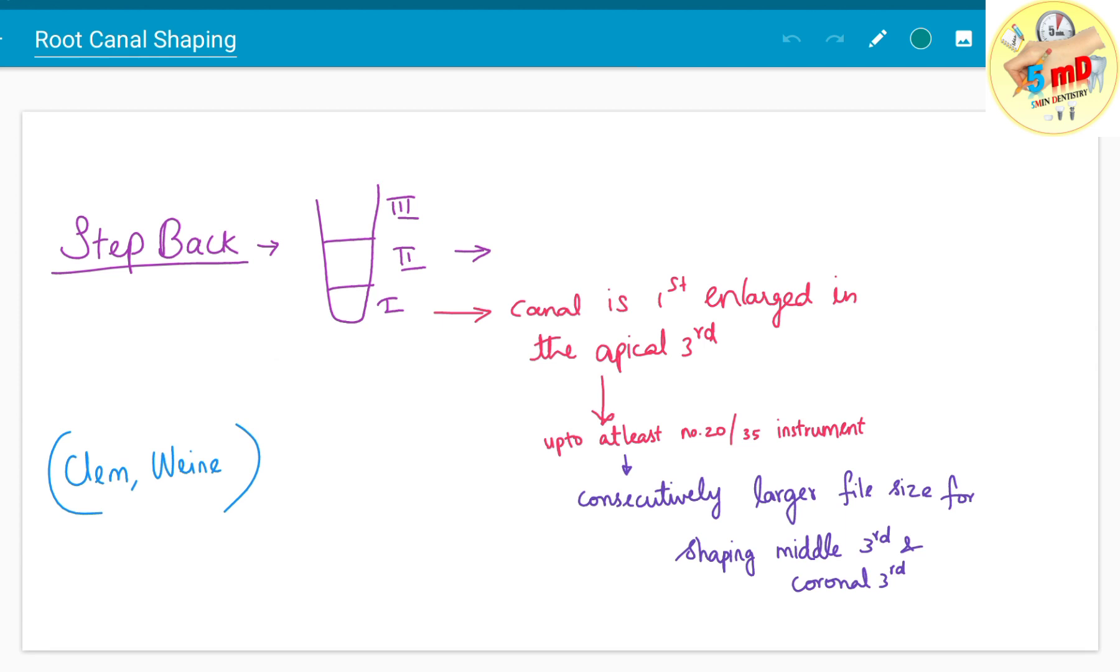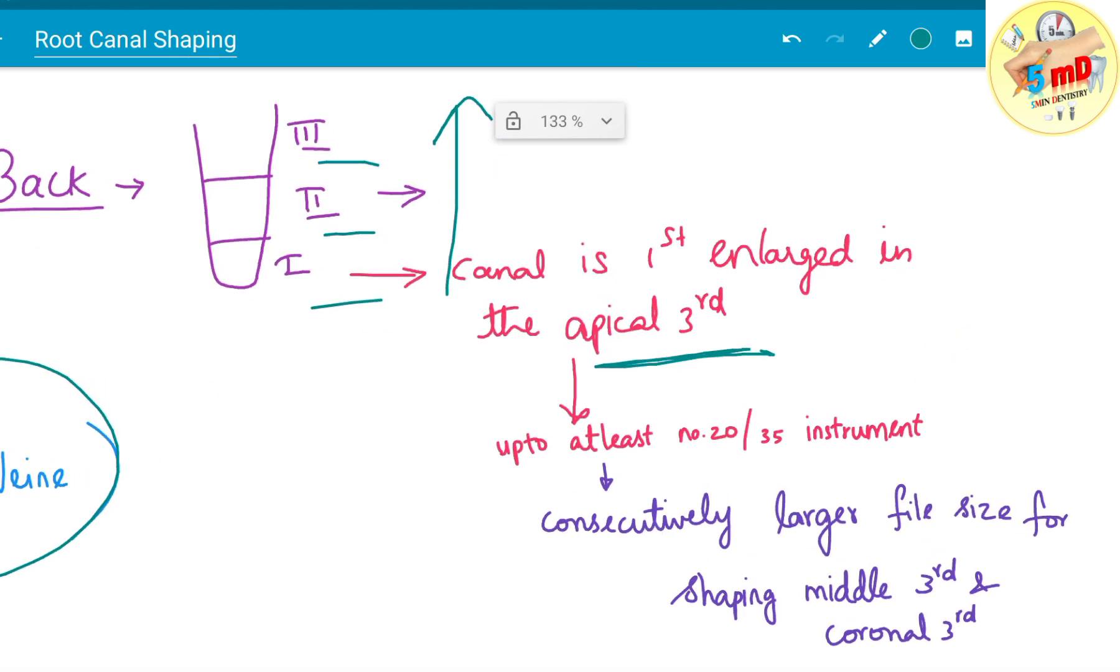The step back technique consists of three areas to be shaped: apical third, middle third, and coronal third. It was introduced by Clem and Vein. The canal is first enlarged in the apical third, then we proceed backwards, hence the name. The apical third is enlarged to at least size 25 or 35, usually using K files, then larger files for the middle and coronal thirds.